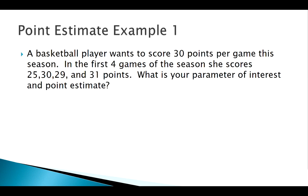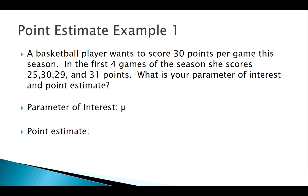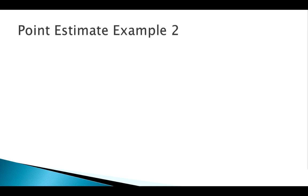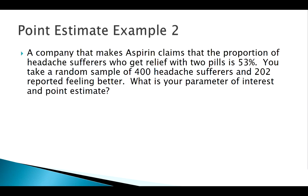So we have quantitative data — specifically discrete quantitative data. We're interested in some sort of average score, so our parameter of interest here is a mean, mu. Our point estimate of that mean is our sample mean. We have a sample of four games, and the sample mean is 28.75.